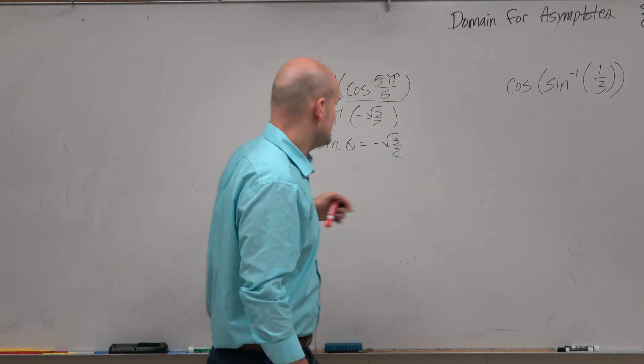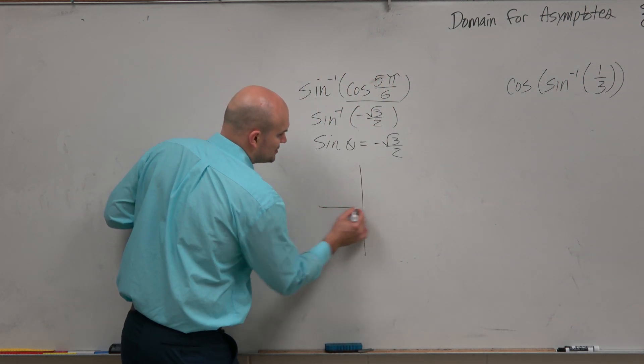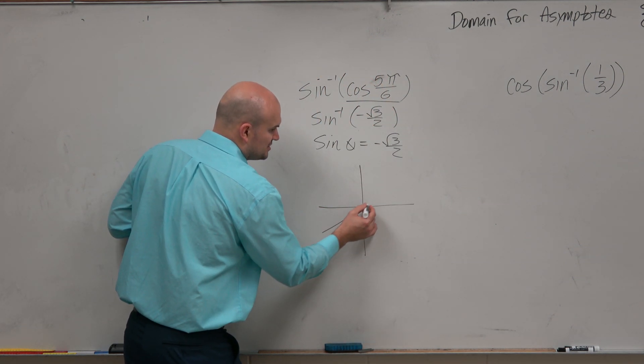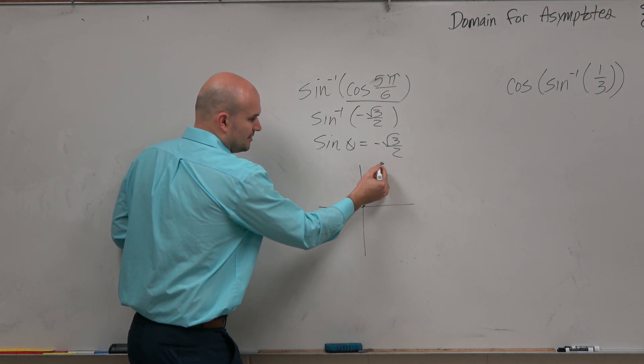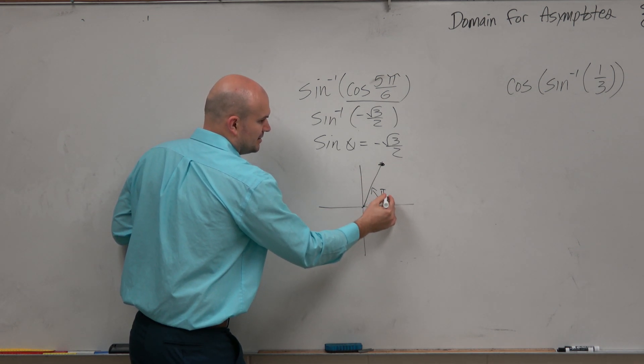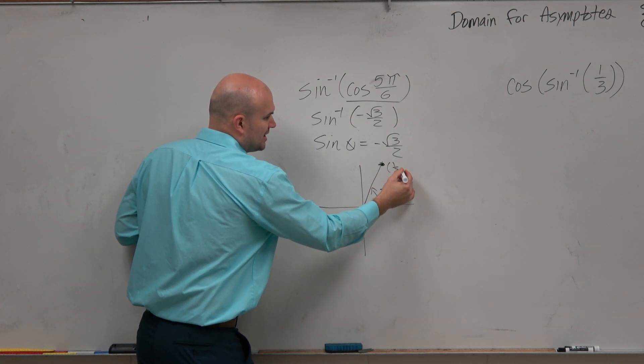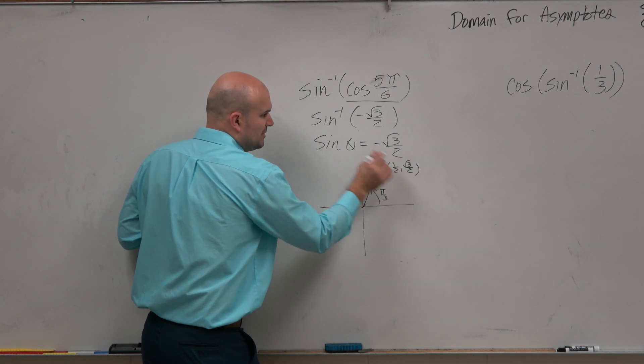However, it has to be negative. So therefore, we think about, well, what angles are negative? Well, if here's π over 3, that's for π over 3, which gives you the y-coordinate square root of 3 over 2. But we need a negative one.